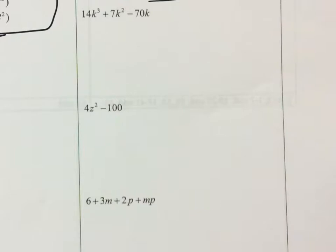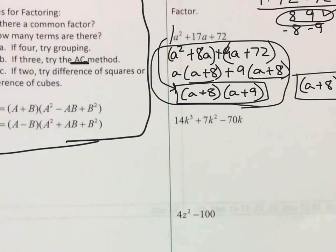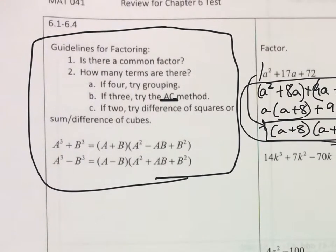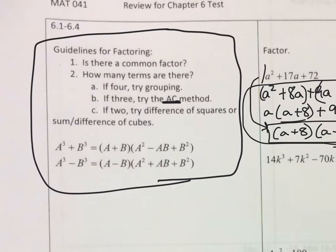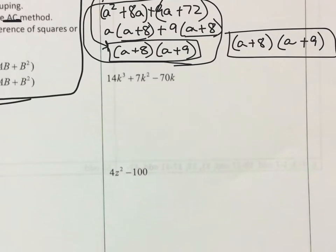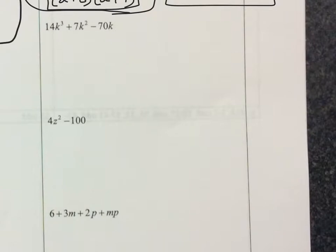Let's factor 14k cubed plus 7k squared minus 70k. We start with our first question: is there a common factor? Looking at 14, 7, and 70, we take the smallest number, 7. The only factor of 7 besides 1 is 7 itself. Does 7 go into 14? Yes, twice. Does 7 go into 70? Yes, 10 times.